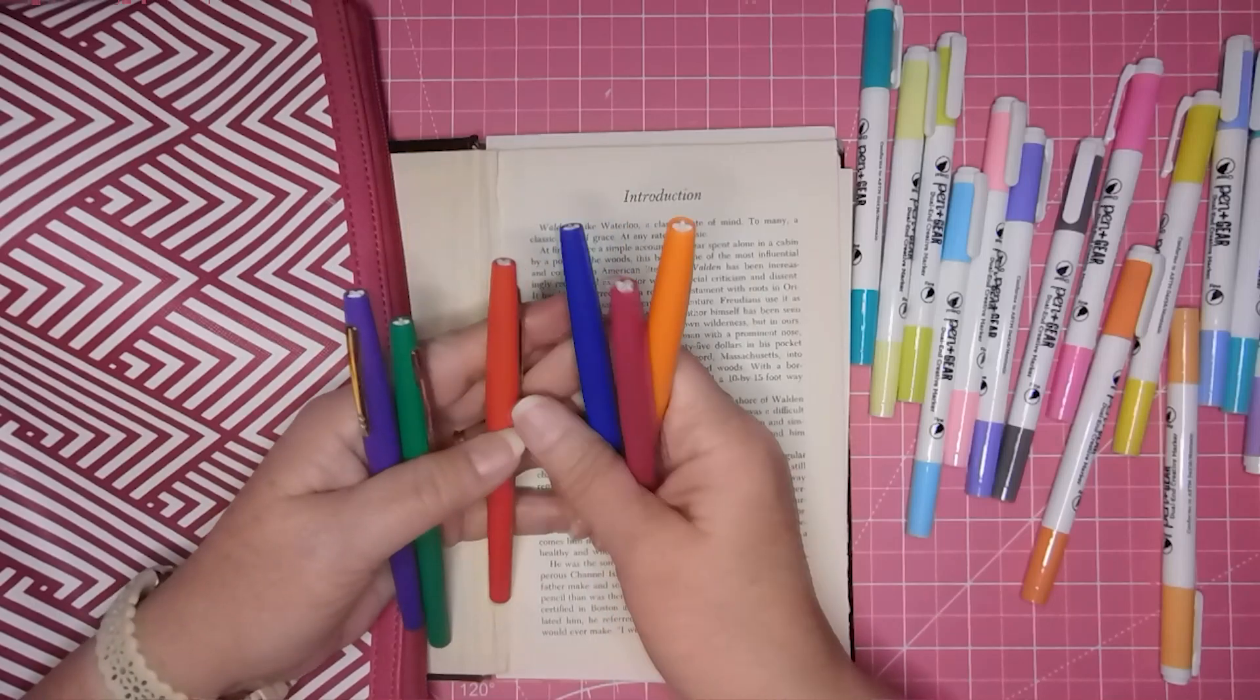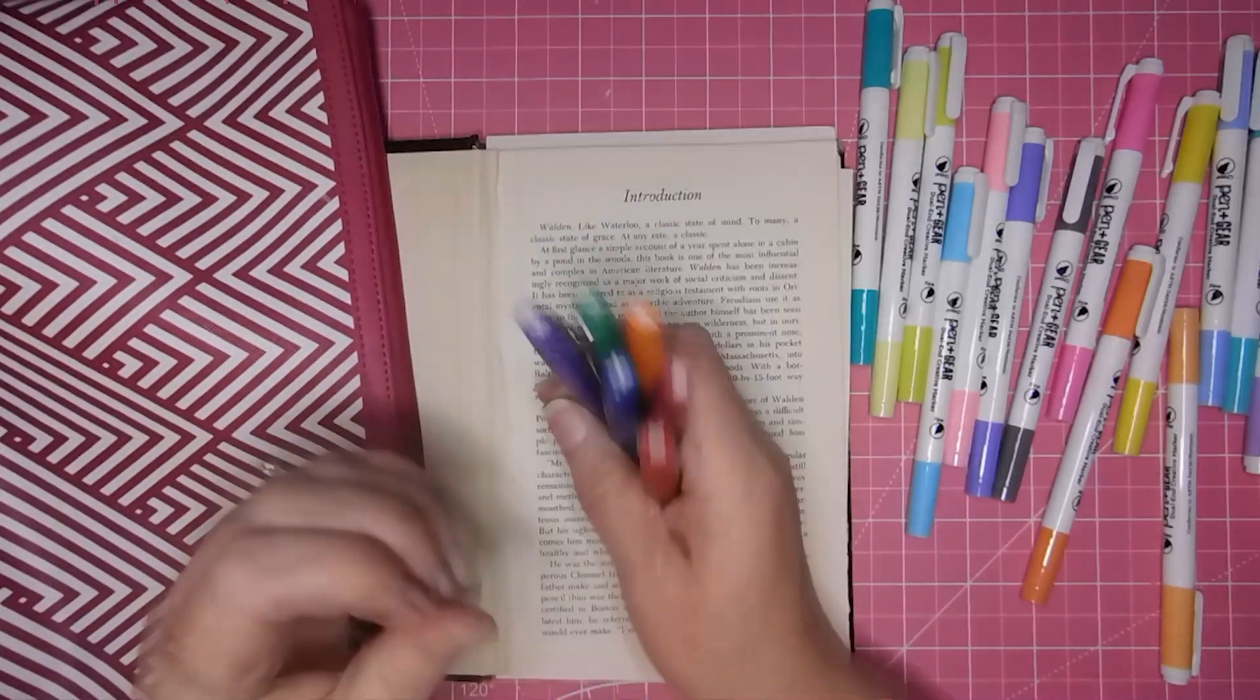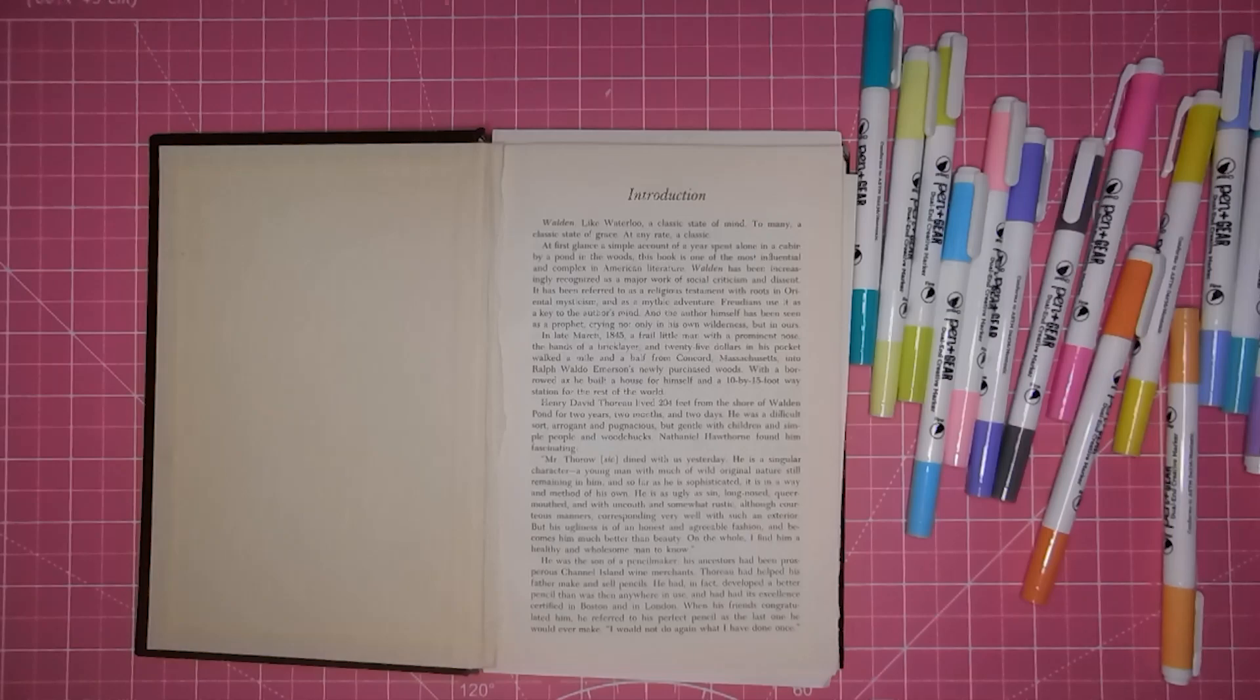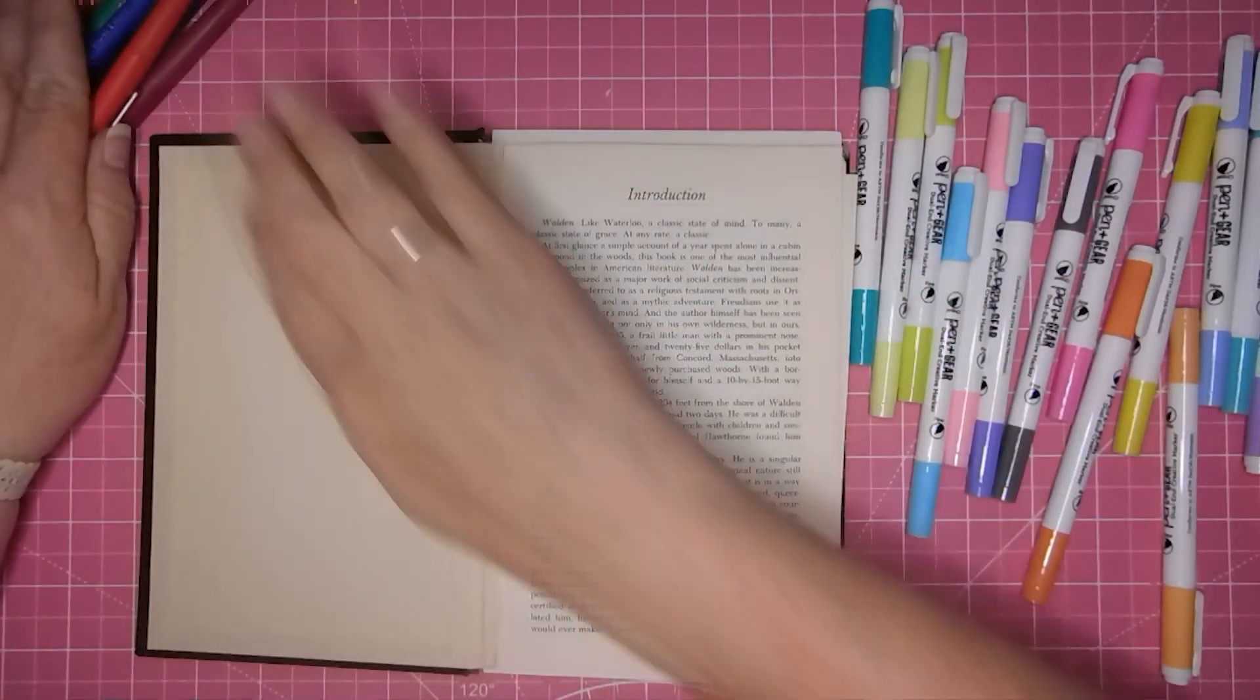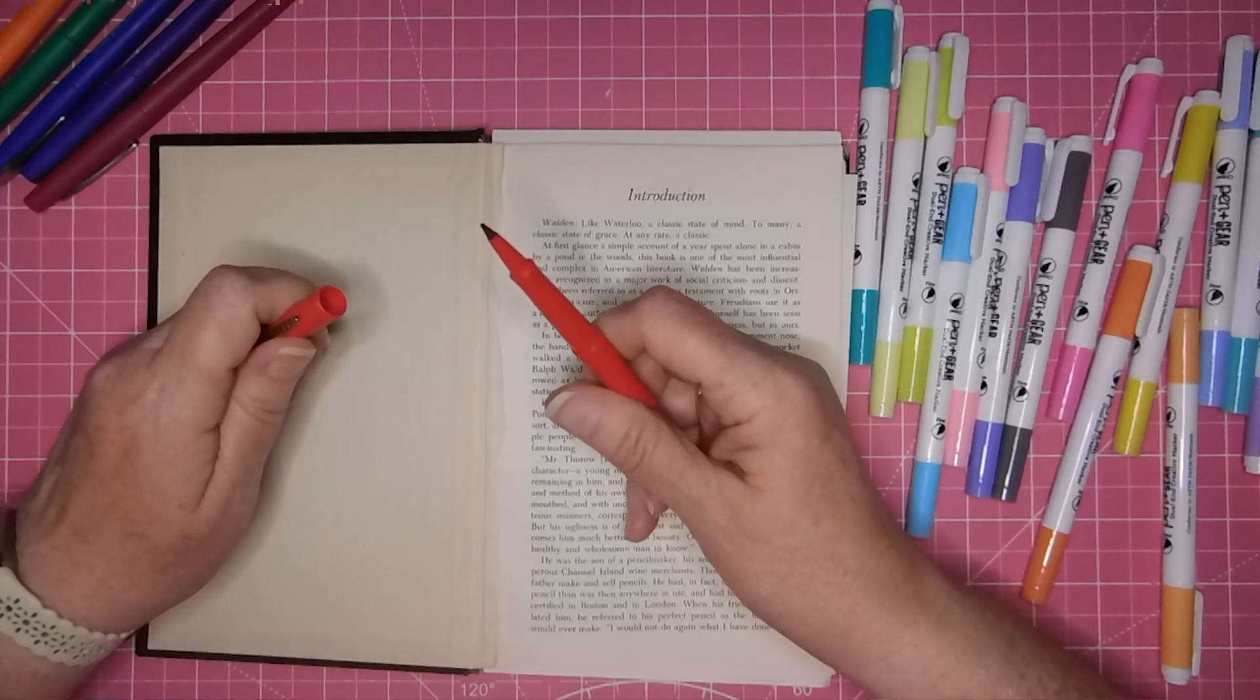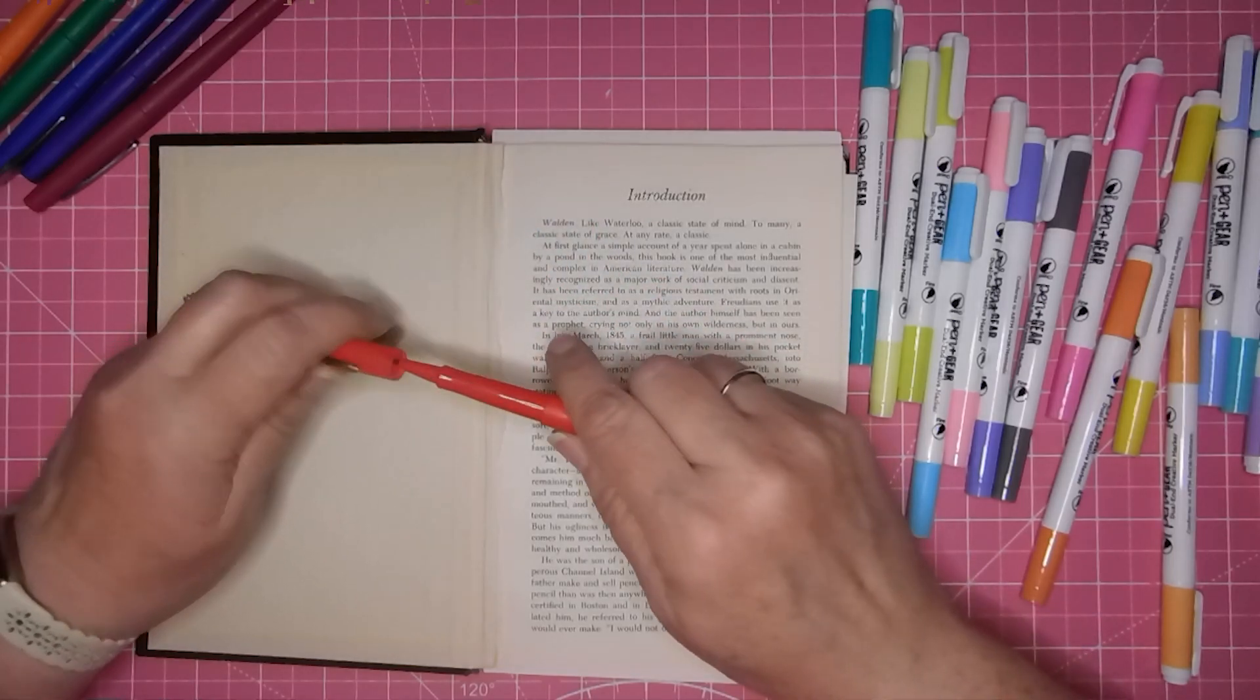So orange, pink, blue, red, green, purple. And then I have those. Those are all just a regular, pretty much medium point.